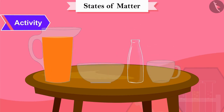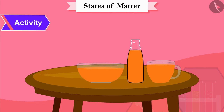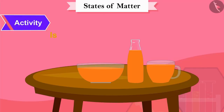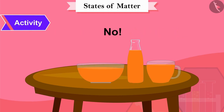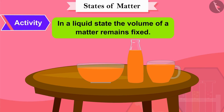Now we will pour this juice into these glass pots one by one. What do you see? Yes, the juice changed its shape every time. This means the shape of matter is not fixed in the liquid state. Is the volume of juice changing from one vessel to another? No — therefore we can say that in a liquid state the volume of matter remains fixed.